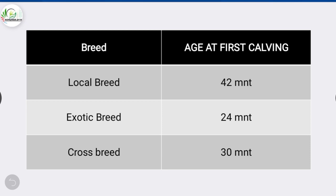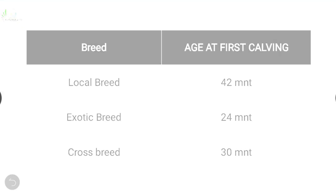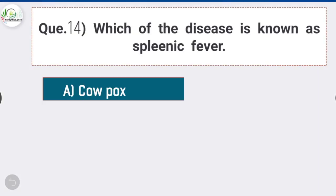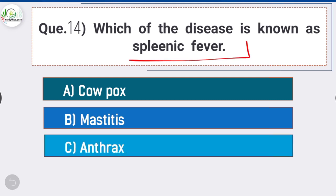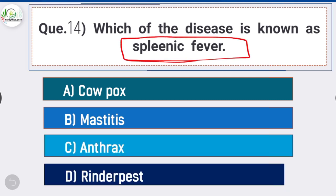Question number fourteen: which disease is known as splenic fever? The answer is option C - anthrax. Anthrax is the disease known as splenic fever, and Rinderpest is known as cattle plague.